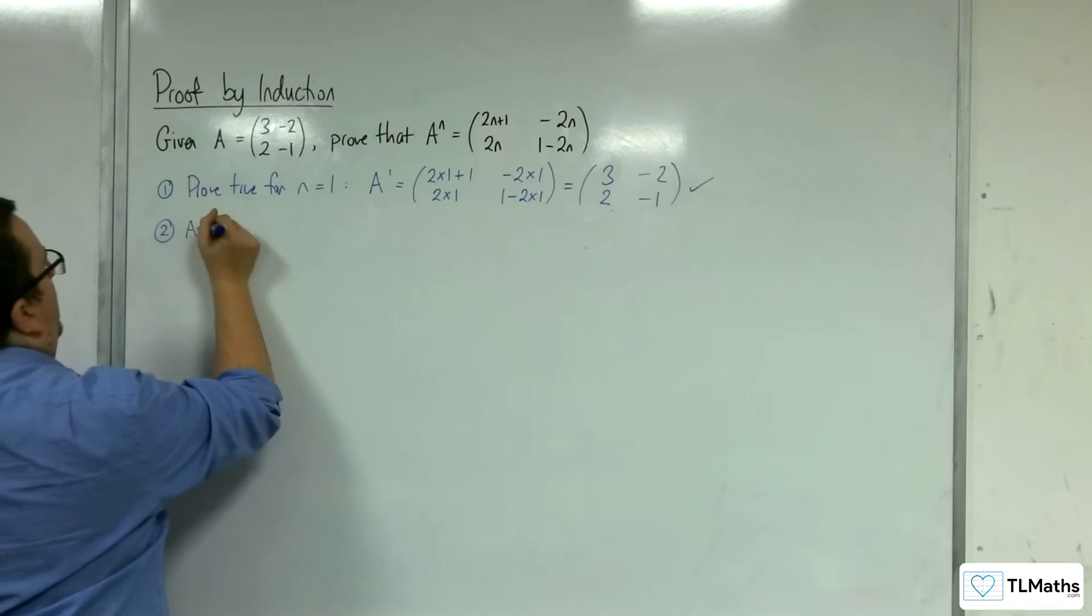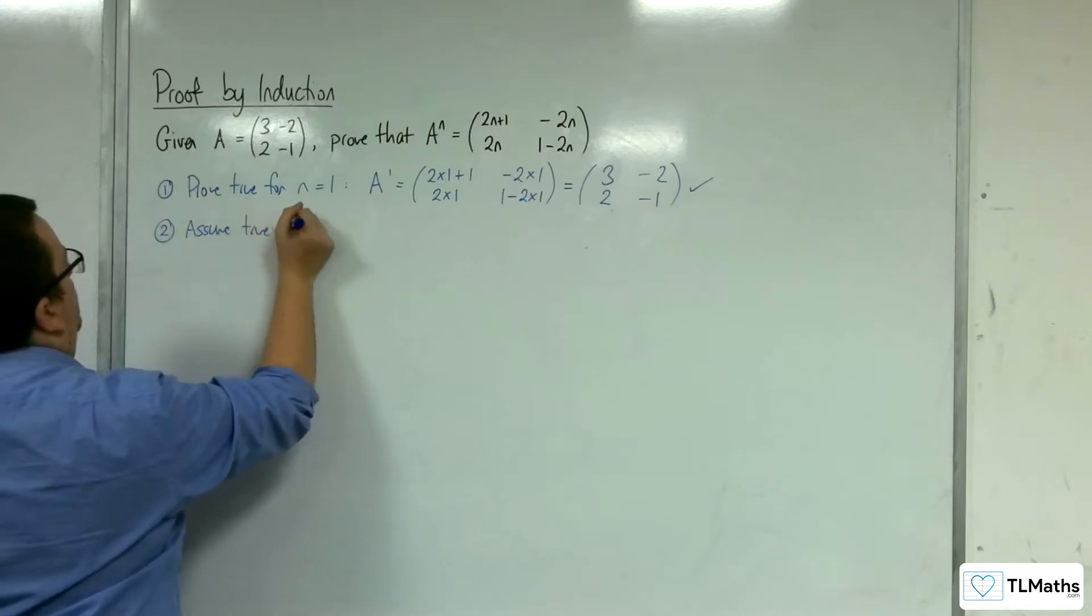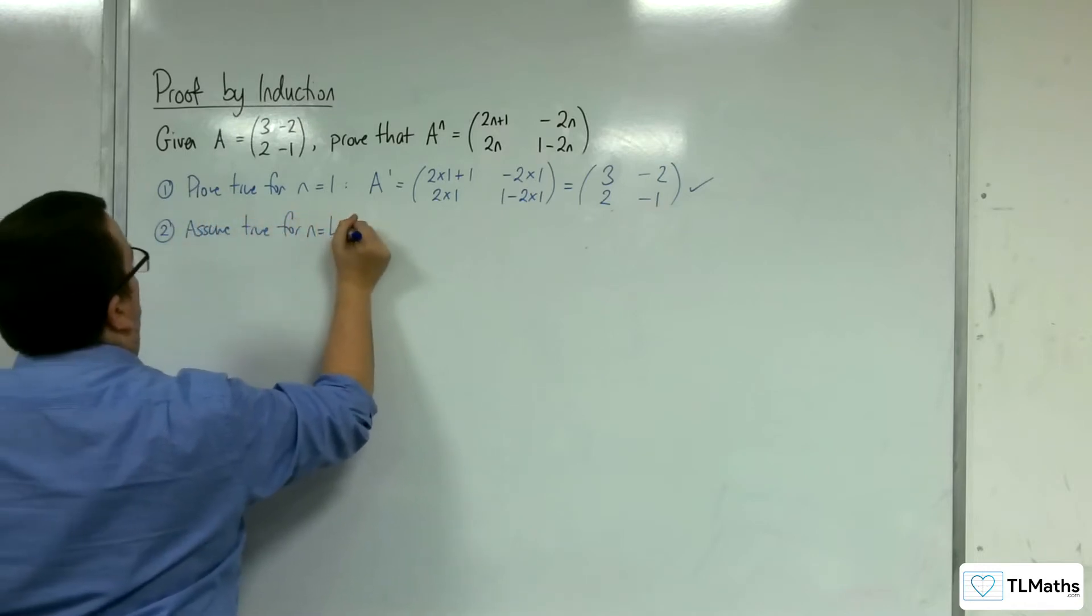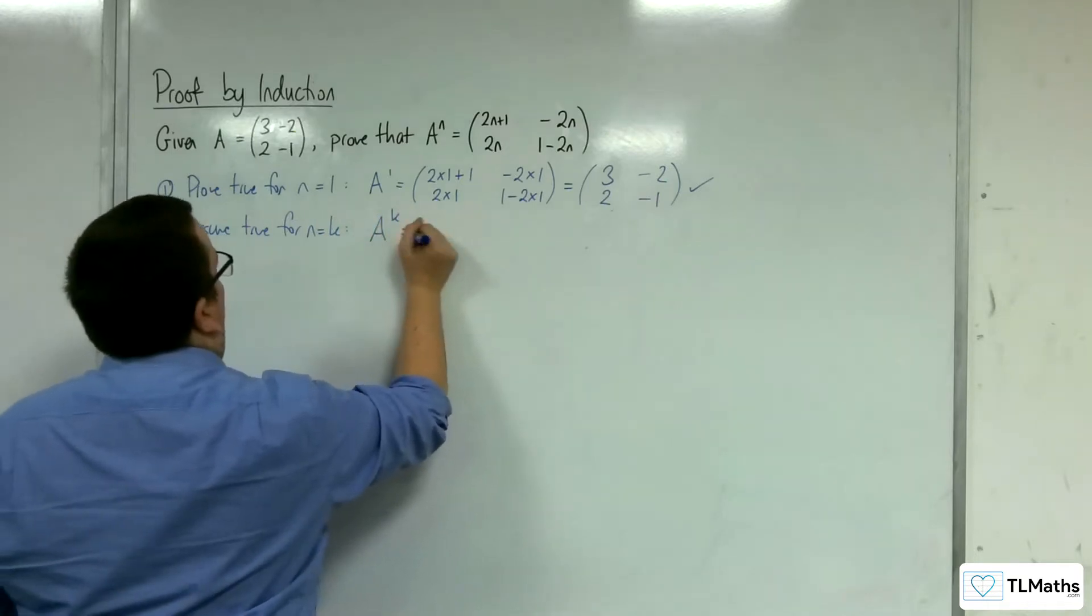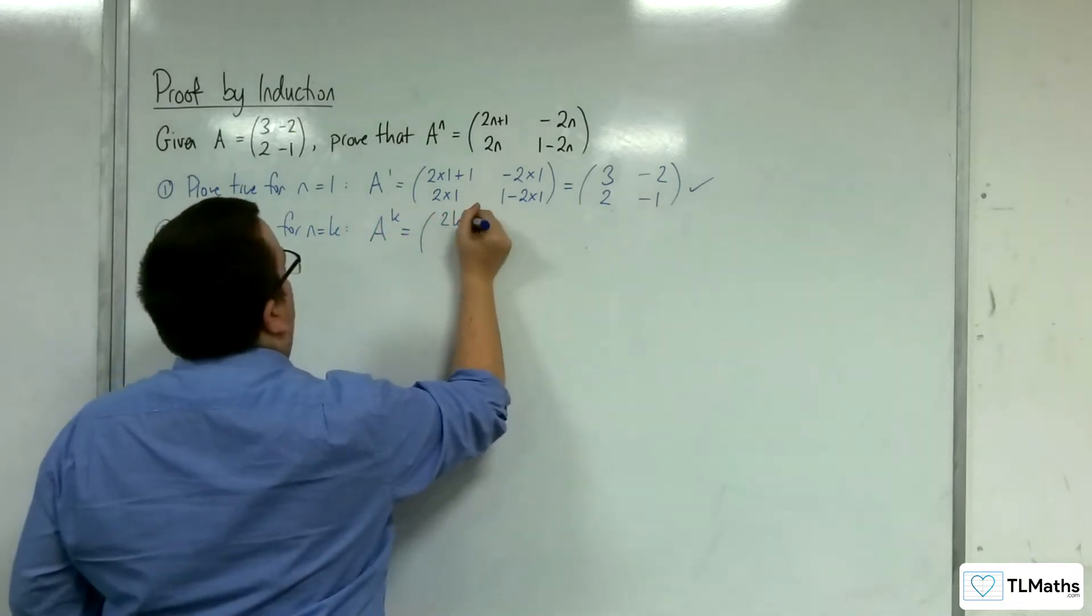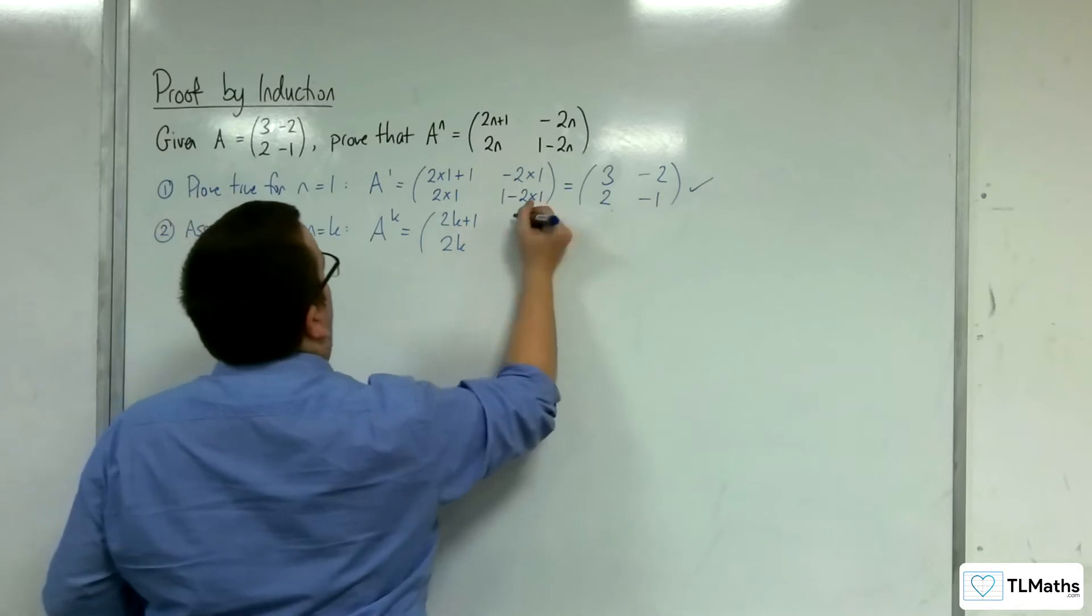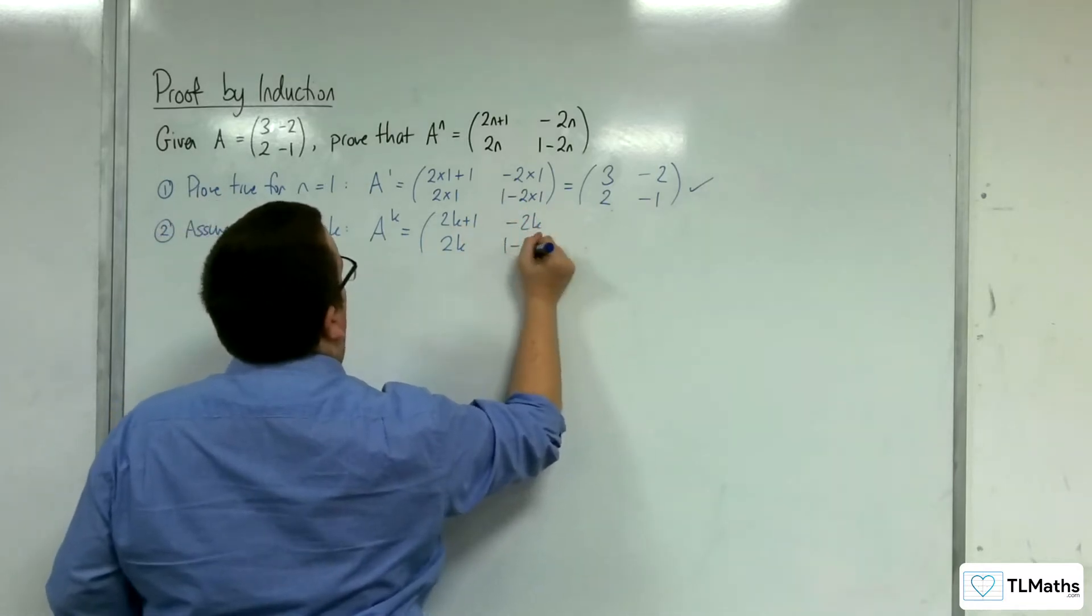Step 2, assume true for n equals k. So A^k will be (2k+1, 2k; -2k, 1-2k).